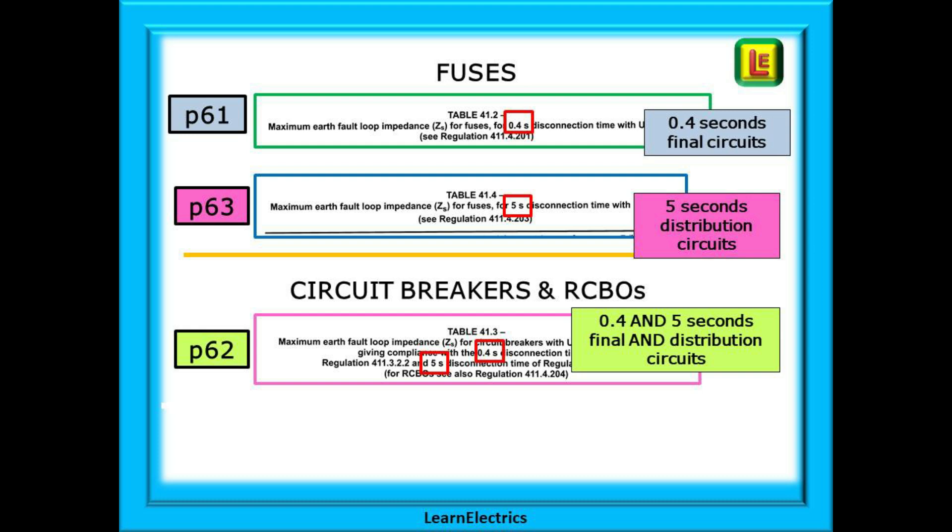One for final circuits and one for distribution circuits. The table on page 62 is different. It is for circuit breakers and RCBOs and covers both 0.4 seconds and five second times. So on page 62 we use table 41.3 for both final circuits and distribution circuits.